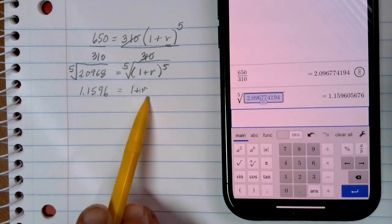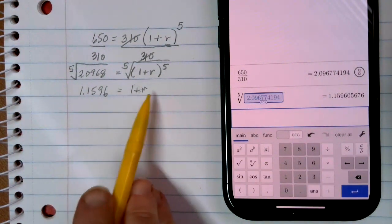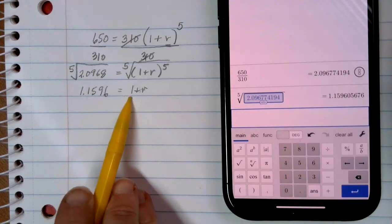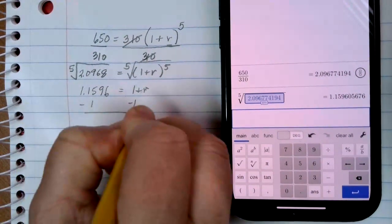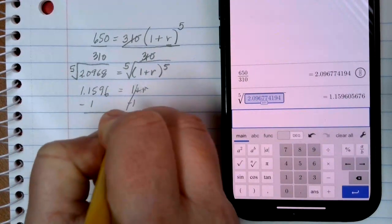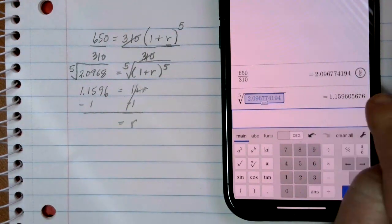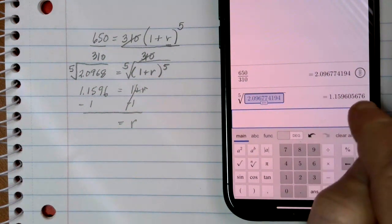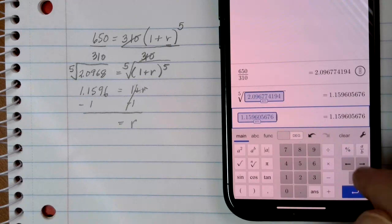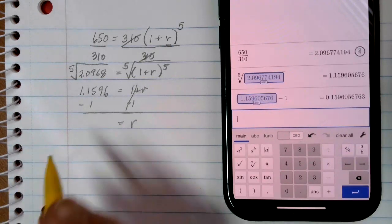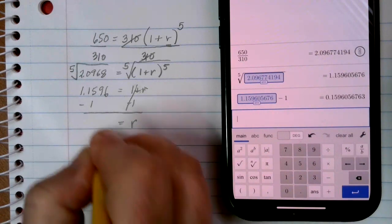And now the R is almost by itself. The last thing that I have to do to get the R by itself is to get rid of this 1. It's being added, so I'm going to subtract 1 from each side. I have the last answer right there on Desmos. That's what I want it to subtract. So I hit the answer button for it to copy down. Do minus 1. And there's my final answer value for R, 0.1596.